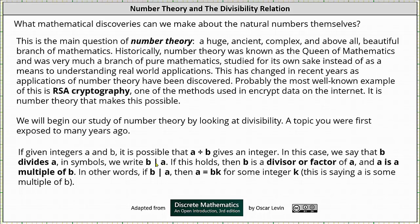Notice if B divides A, then the quotient of A divided by B results in an integer. If this holds true, then we can say that B is a divisor or a factor of A, and A is a multiple of B. In other words, if B divides A, then A is equal to B times K for some integer K.